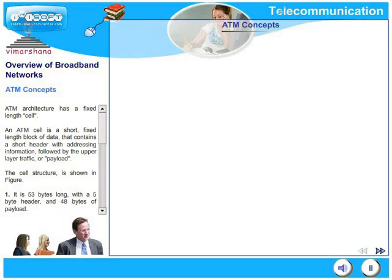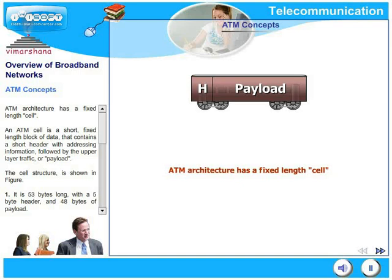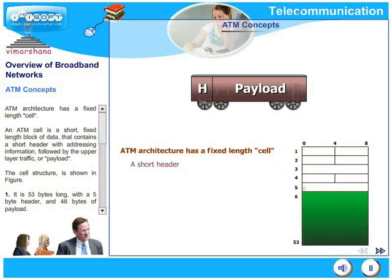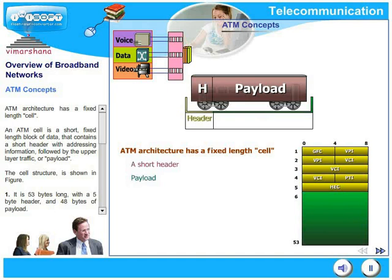Let us move over to ATM concepts now. ATM architecture has a fixed length cell. An ATM cell is a short fixed length block of data that contains a short header with addressing information, followed by the upper layer traffic or payload. So it has got a header and a payload.